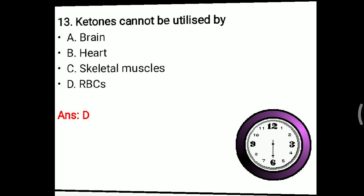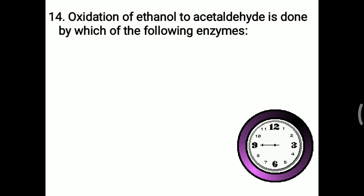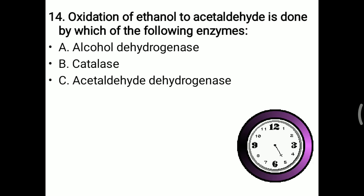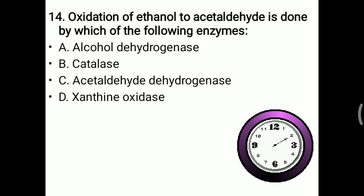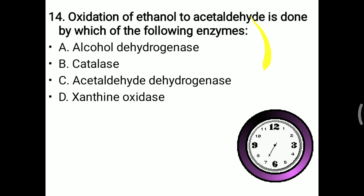Next MCQ: oxidation of ethanol to acetaldehyde is done by which enzyme? Options: alcohol dehydrogenase, catalase, acetaldehyde dehydrogenase, or xanthine oxidase. Xanthine oxidase is for purine catabolism/uric acid formation. Catalase is involved in catalysis of hydrogen peroxide. Acetaldehyde dehydrogenase is involved in the second reaction of alcohol metabolism. Ethanol to acetaldehyde — the first reaction of alcohol metabolism — is catalyzed by alcohol dehydrogenase. The right answer is A.